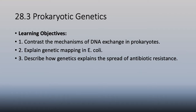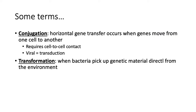Moving on to genetics: how DNA can be exchanged in prokaryotes. Key terms: conjugation is horizontal gene transfer where genes move from one prokaryote to another requiring cell-to-cell contact via pili - sometimes called sex pili even though they're not reproducing sexually. Transduction is viral-mediated gene transfer. Transformation is picking up foreign DNA directly from the environment.